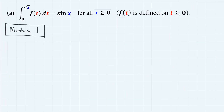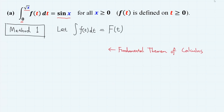For the first problem, the integral of f(t) from 0 to √x equals sin(x). First, we need a notation for the antiderivative function. Let the integral of f(t) dt be capital F(t). Then by the fundamental theorem of calculus, the left-hand side can be expressed as F(√x) minus F(0), and this equals sin(x).